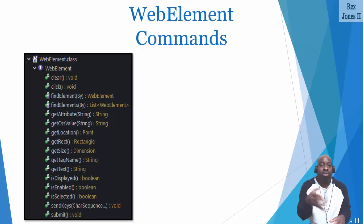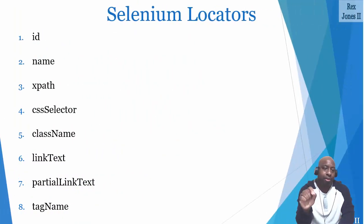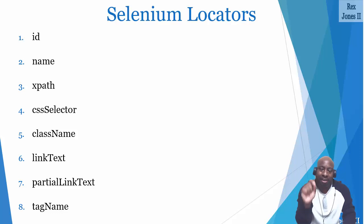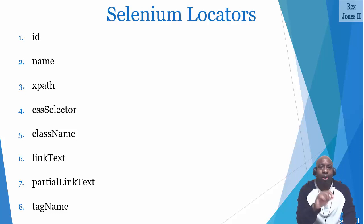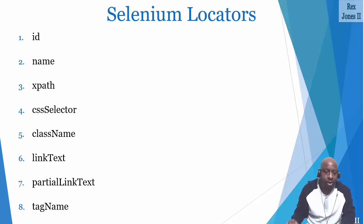Next are the WebElement commands. A web element is anything you see on a web page. As a result, they have the most commands at 16. These commands perform actions on web elements. However, before we perform an action, we must find the web element. Selenium provides 8 locators to find the web element. My first choice is the ID locator because it has a unique value. Next is the name locator. Sometimes I skip the name locator and go straight to XPath or CSS selector because they are powerful. The last 4 locators are used if they are the only option available.